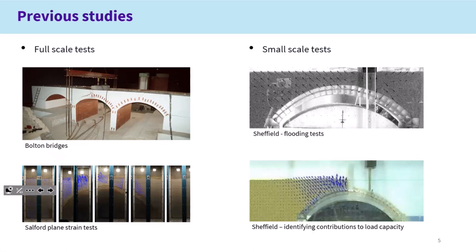A little history of physical modelling work done in the past. There have been a number of full-scale tests. There's work that Matthew did at Bolton, which helped establish the contributions of spandrels and also the effect of ring separation. We did some large-scale plane strain tests at the University of Salford, a joint Salford-Sheffield project, which helped us establish some of the cyclic loading aspects that led to the PLS concept. We were able to subject these arches to many cycles of load, and it was very much designed to be a plane frame rig, because we didn't fully understand two-dimensional behaviour at the time.